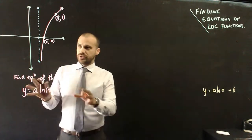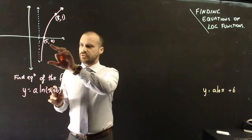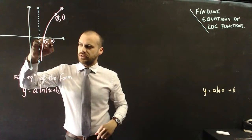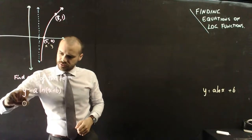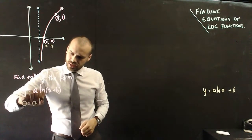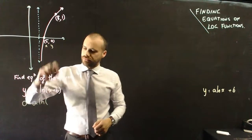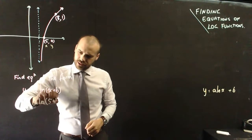So I'm going to do that now. I'm going to sub in 5, 0 there. That's the x value and that's the y value. So I'm going to say 0 equals a ln(5) plus b.